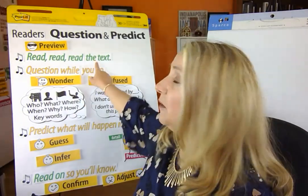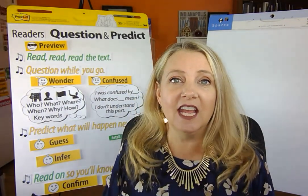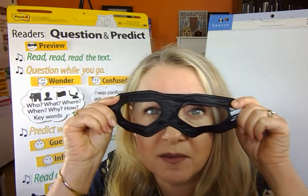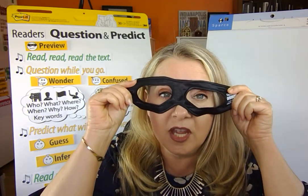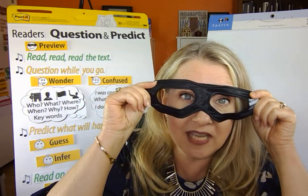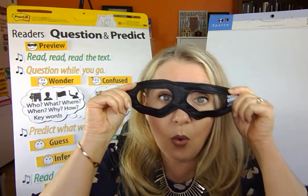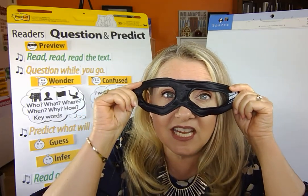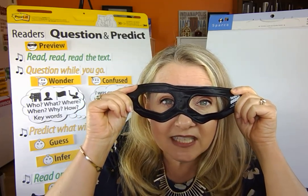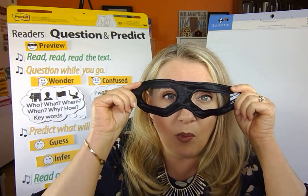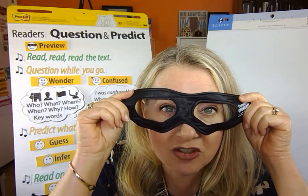We've learned that even before you start reading the words in the text, you can do a preview. You can put on your mask and steal as much information as possible from the title, headings, photos, captions, table of contents, and maps — all of those things. We look through every page or section and see if there's anything we can steal. We were information thieves.